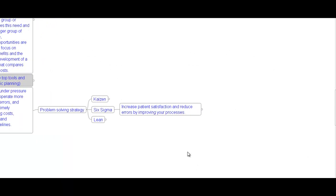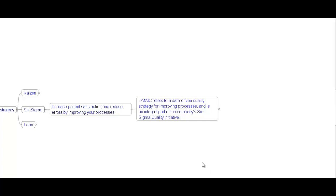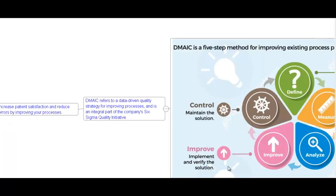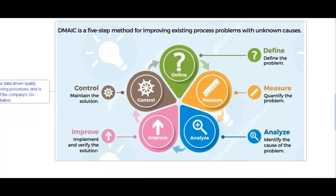Six Sigma aims to increase patient satisfaction and reduce errors by improving processes. DMAIC refers to a data-driven quality strategy for improving processes and is an integral part of Six Sigma quality initiatives. DMAIC is a five-step method for improving existing process problems with unknown causes. D stands for Define — define the problem. M stands for Measure — quantify the problem. A stands for Analyze — identify the cause of the problem. I stands for Improve — implement and verify the solution. C stands for Control — maintain the solution.